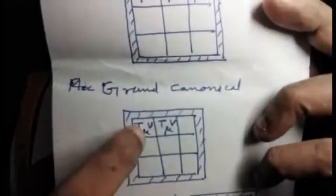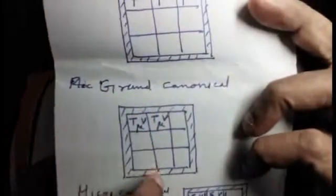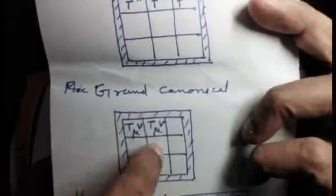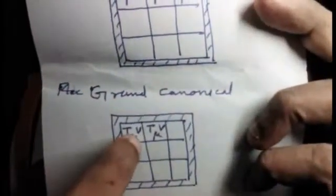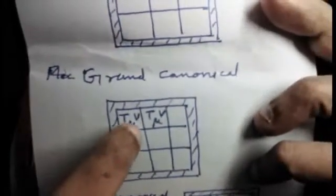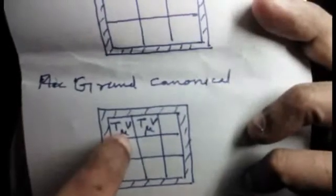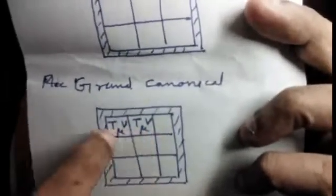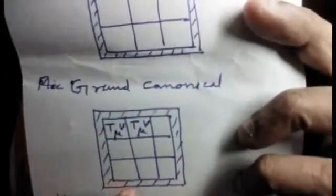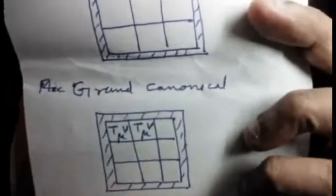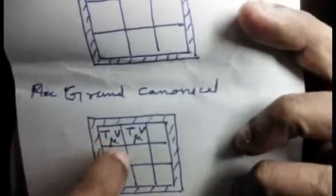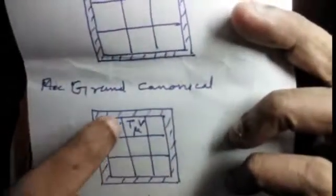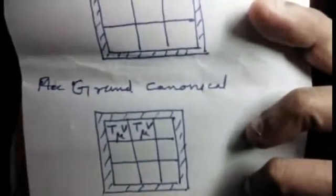Temperature and volume are constant — temperature constant means thermal equilibrium, with separating conducting walls. The total number of molecules is constant, and chemical potential is constant. There is no chemical potential exchange. The walls are perforated. Volume is constant and rigid. Temperature is constant. It is conducting — this describes the separating force, making it a grand canonical ensemble.